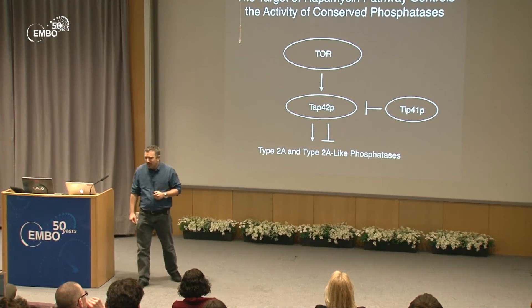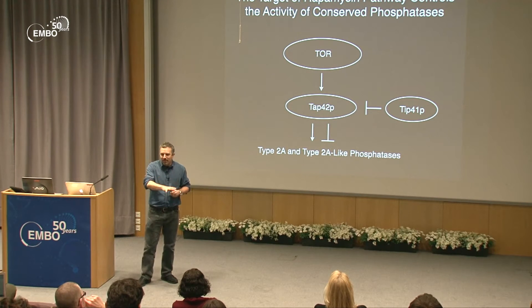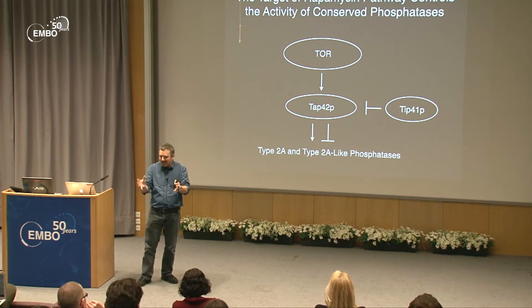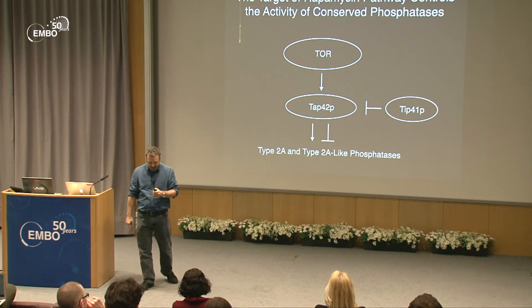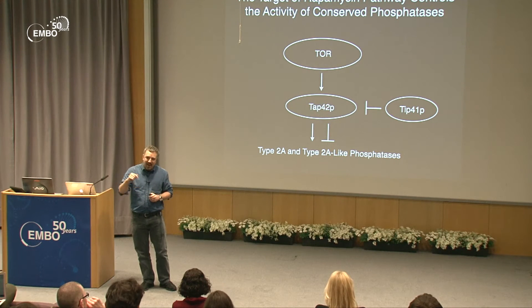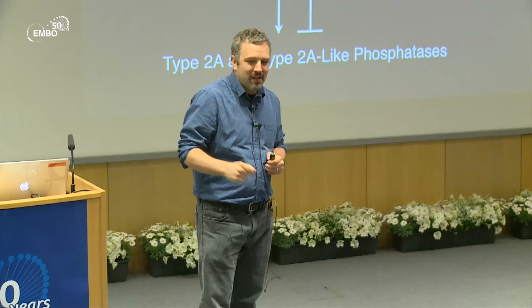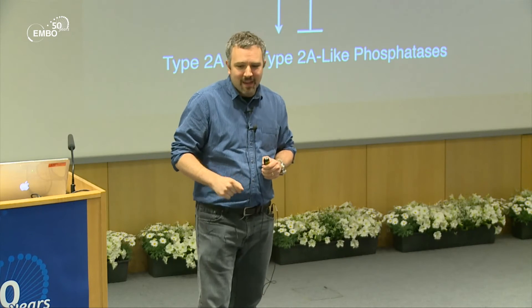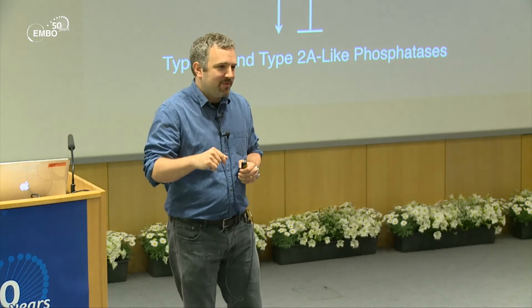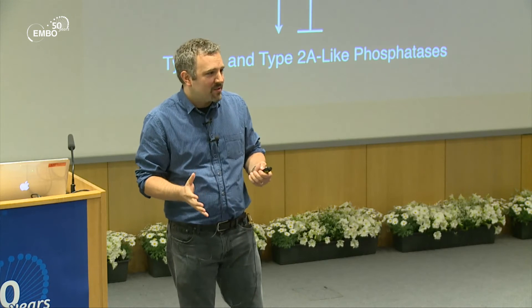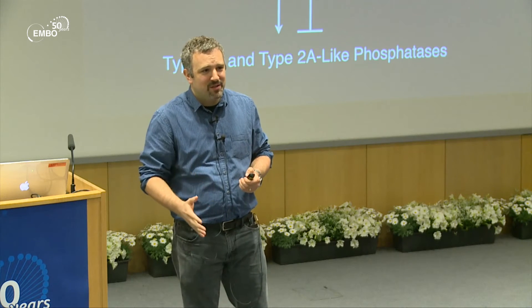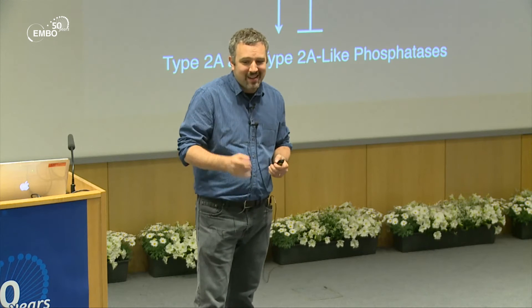Tip41's role: TOR kinase activates a protein called Tap42, which is inhibited by Tip41. Downstream of Tap42 are a series of type 2 and type 2A-like phosphatases, conserved across many eukaryotes.